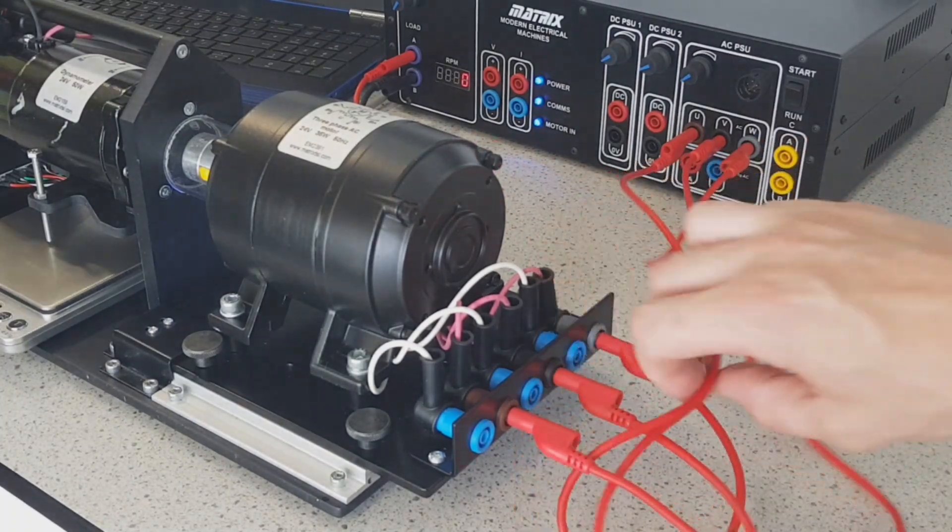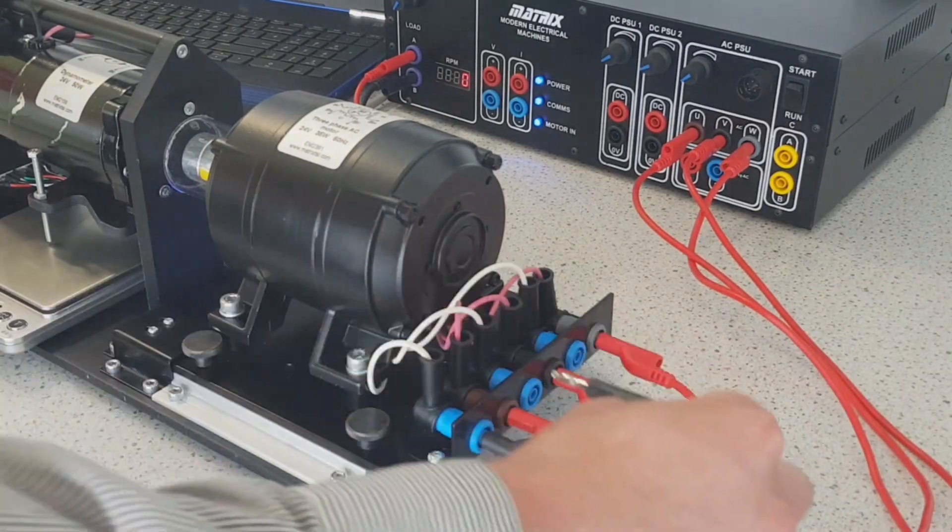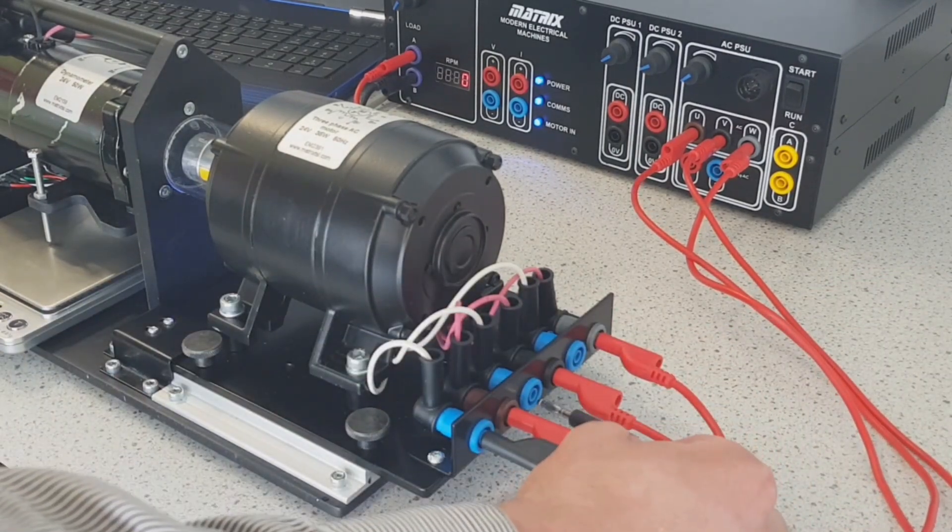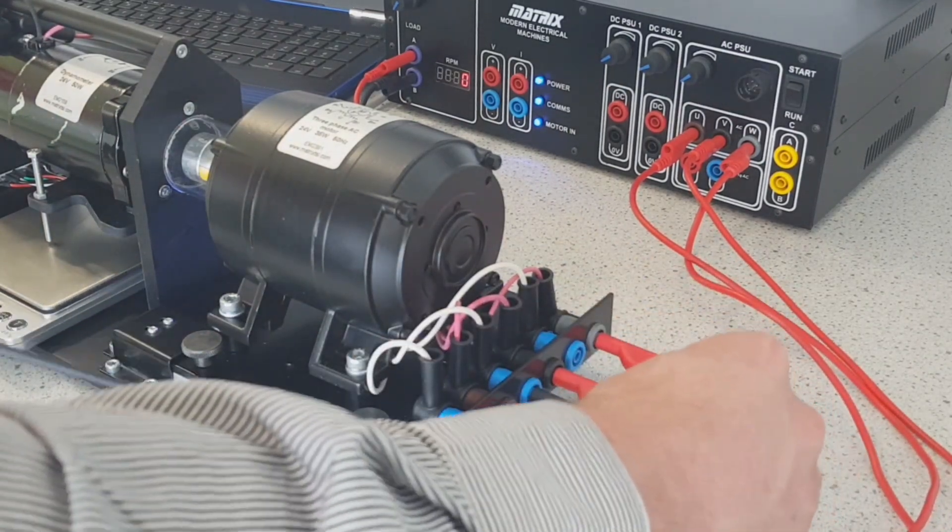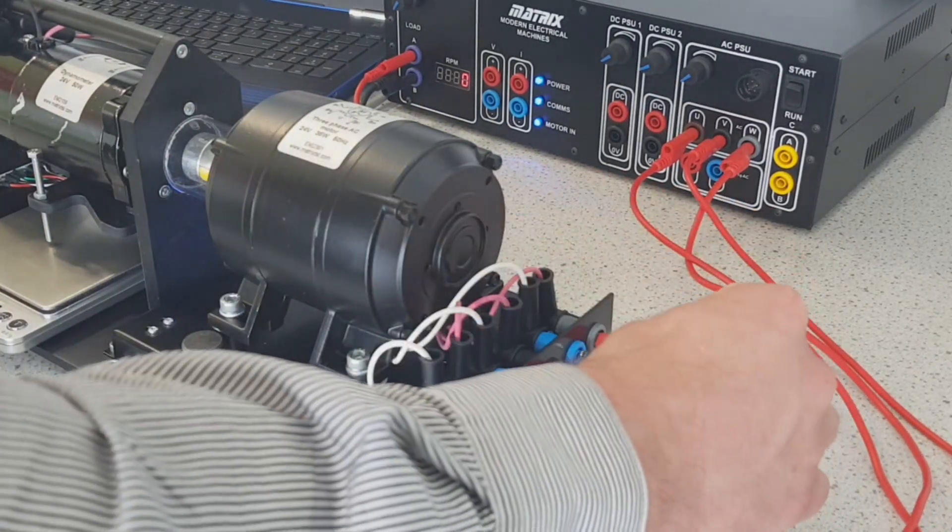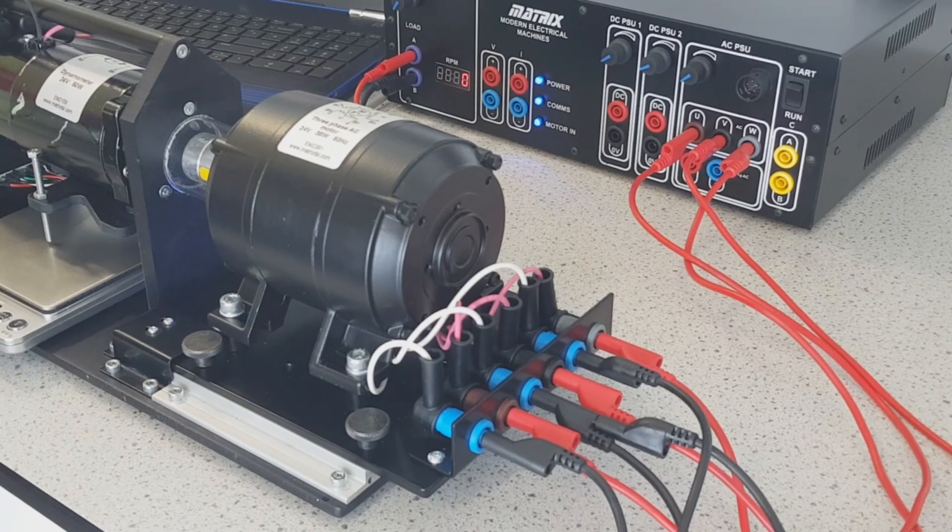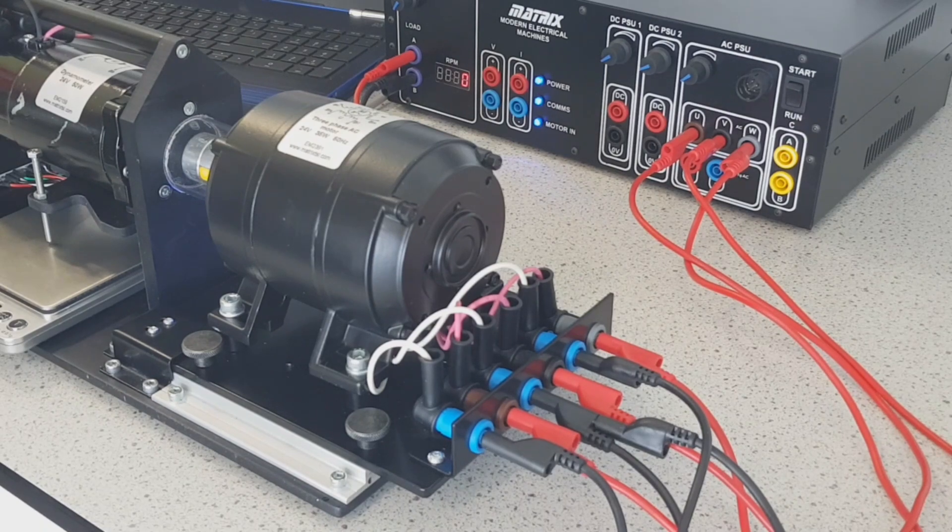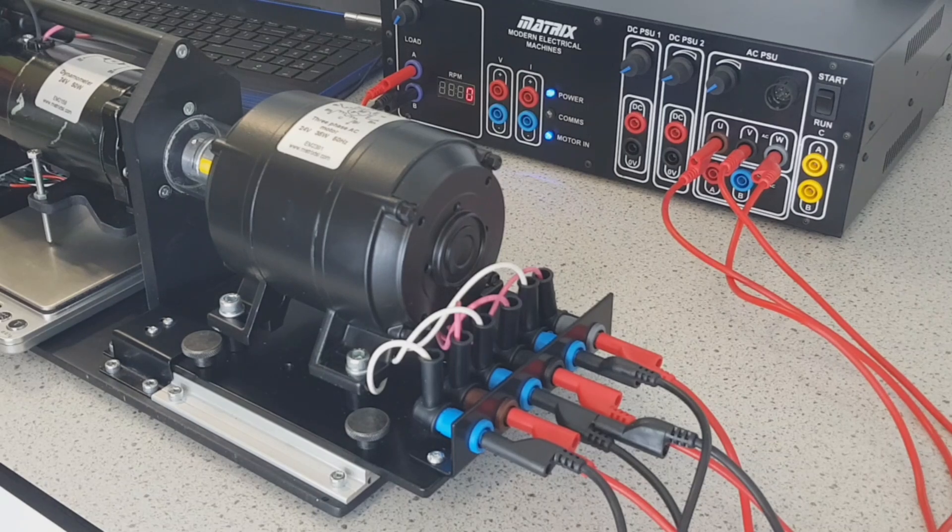So we're going to connect the windings up in star there. We can see here these are the other sides of each of the coils. We're just linking those out together so that we get those in star. And am I right in thinking that this can also be connected up in delta, should we want to demonstrate the difference in operation between star and delta? Absolutely. So I'll be honest with you, that took about a minute to get that hooked up and ready to go. That's absolutely fantastic in terms of prep time and demonstration time.